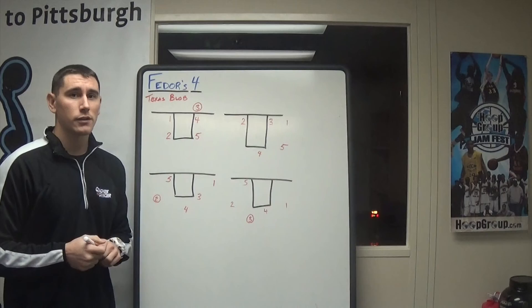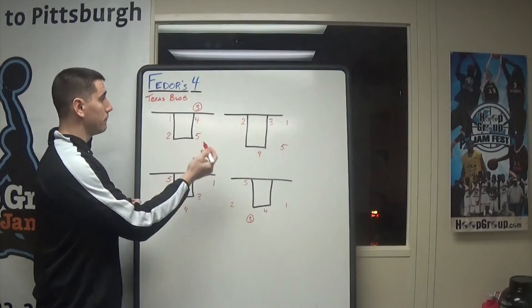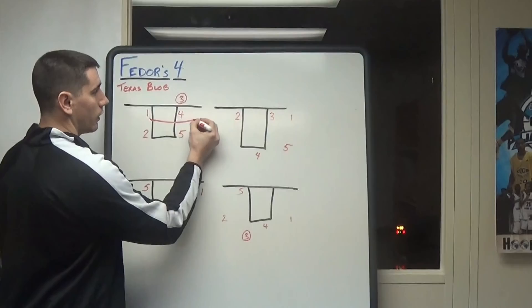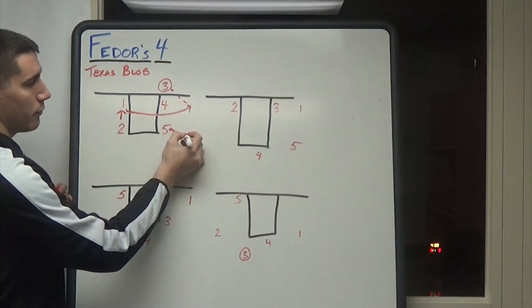So for our last one, we have a Texas baseline out of bounds here. Again, another special situation. I think a great opportunity to get a score here on a baseline out of bounds. What we have is our three taking the ball out. We're in a box set. As soon as he says break, or as soon as the referee hands in the ball, our one is going to sprint through to the corner here. Our two dives to the rim. You might get a shot there if we catch the defense sleeping. If not, we're going to enter it to the corner.